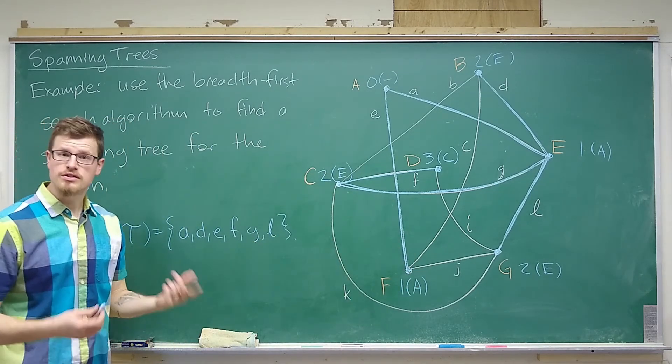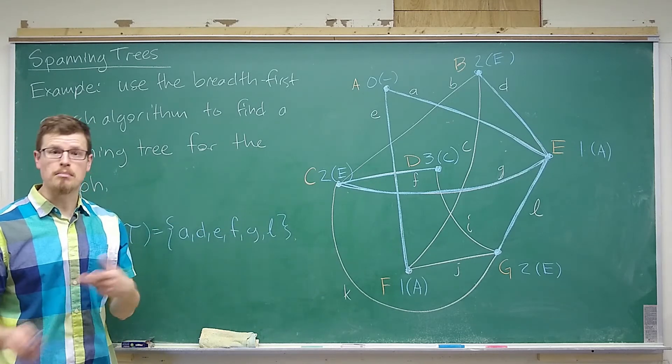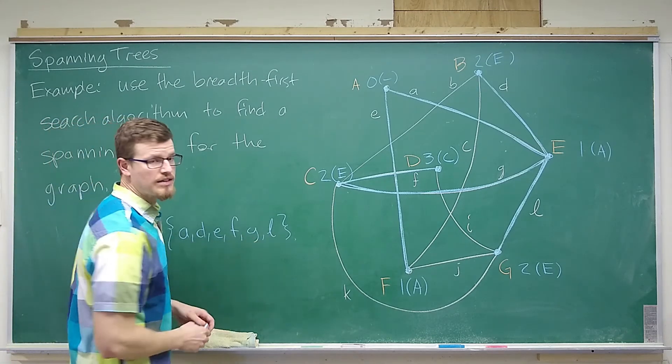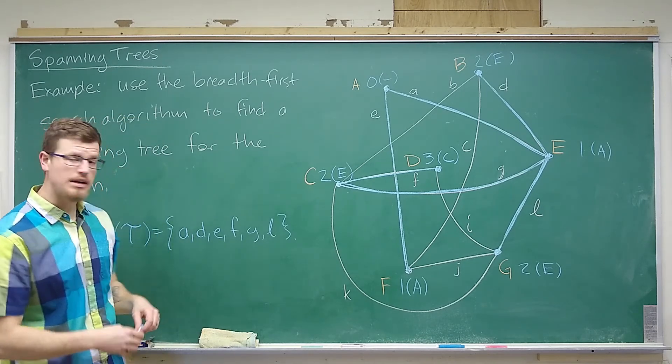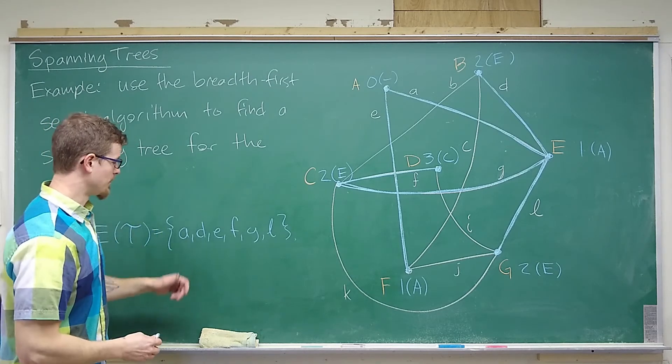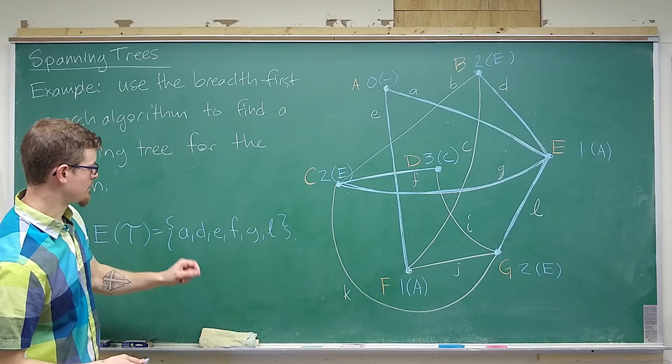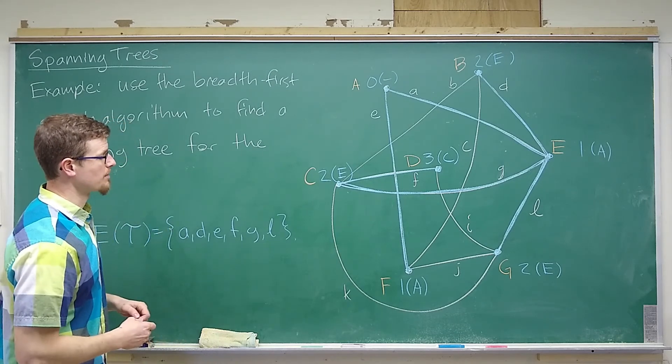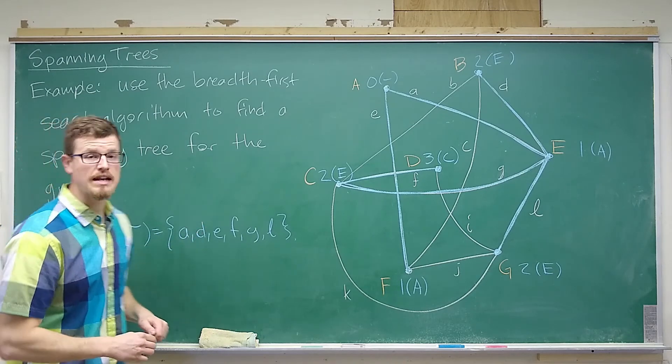If you have a tree with seven vertices, as we have here, then it should have seven minus one edges, which would be six. And we have one, two, three, four, five, six edges. So, we know that we have a spanning tree. If we consider the equivalencies for a spanning tree, then having exactly N vertices and N minus one edges would be part of that.